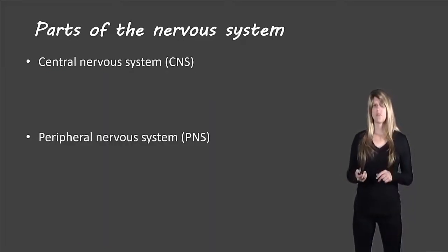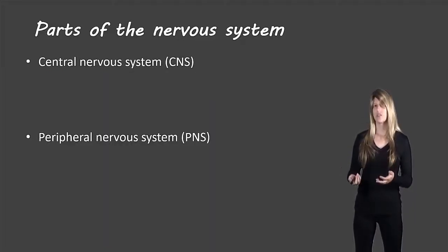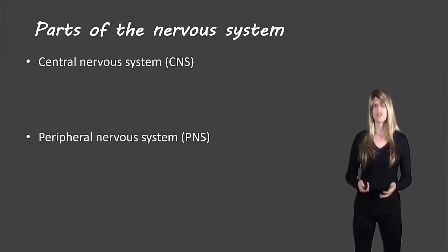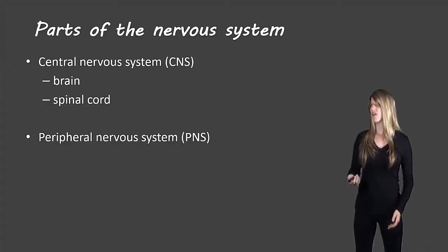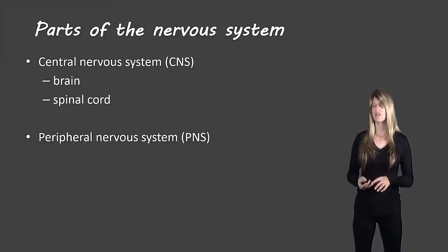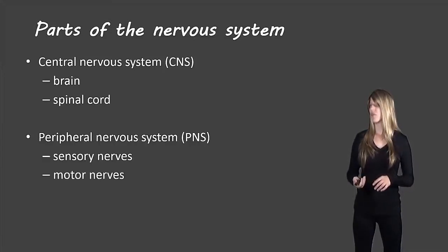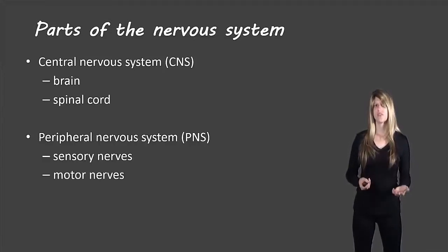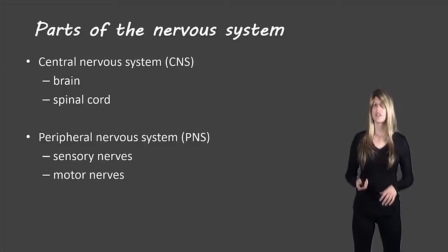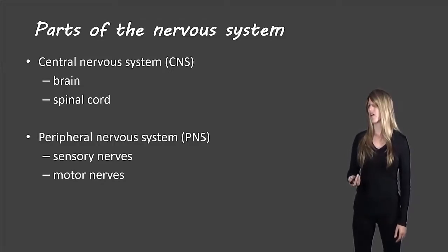Now there are two different parts of the nervous system: the central nervous system, or CNS, and the peripheral nervous system, or PNS. The central nervous system is the brain and the spinal cord, and the peripheral nervous system includes the sensory nerves and the motor nerves. We'll take a look at each of these different parts.